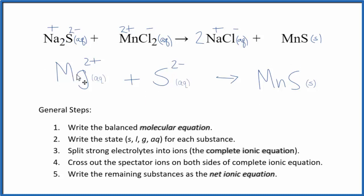And I noticed that I have Mg here when it should be Mn. Let's get rid of that. Make that an N. You can see I have 1 manganese here, 1 here, 1 sulfur here, and 1 sulfur here. So this is our balanced net ionic equation.